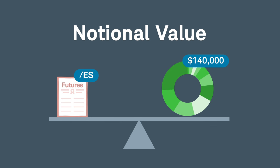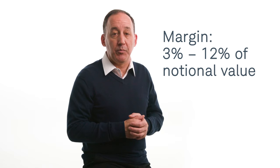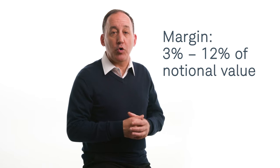However, by using a futures contract, Trader A can put down a fraction of the contract's notional value. Margin is set by the futures exchange and is typically 3 to 12% of the contract's notional value. Some brokers may choose a higher requirement. Therefore, initial margin can change at any time.